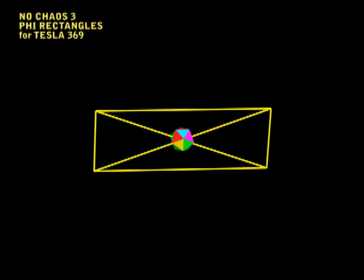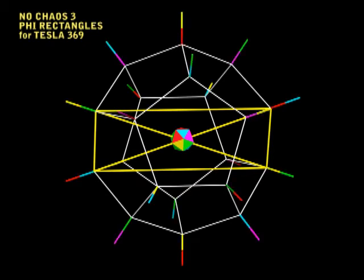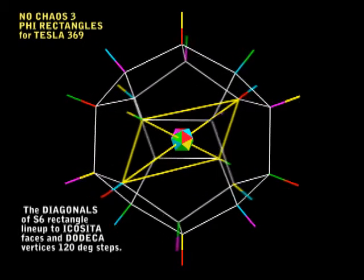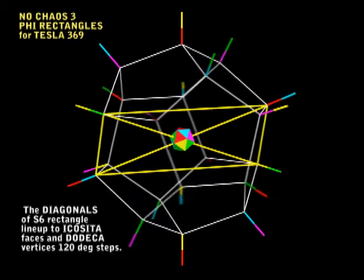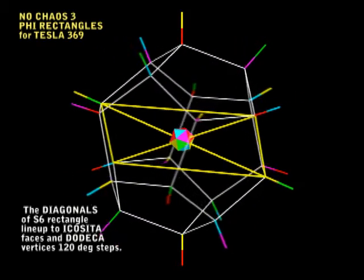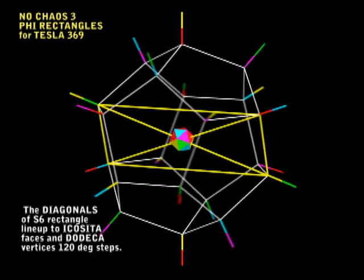And now I'm going to add the size 6 dodeca outline. And I'm going to show you the 1020 color vector system also. So now you can see that the diagonals of the golden ratio rectangle line up perfectly to the vertices and center faces of the Icosita. Isn't that something?